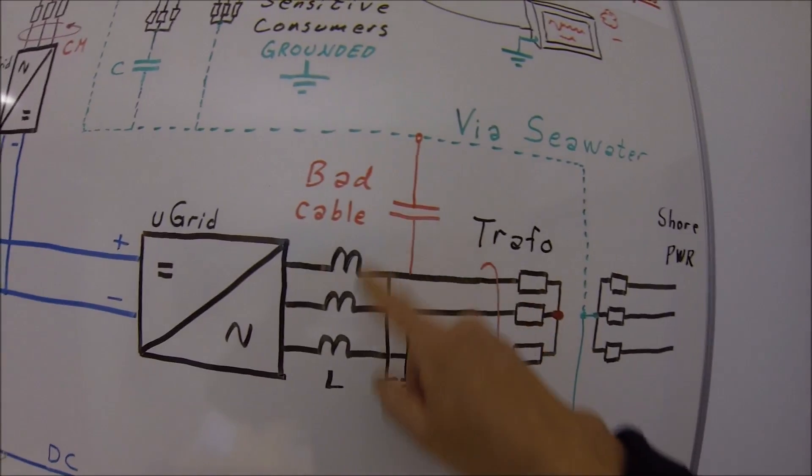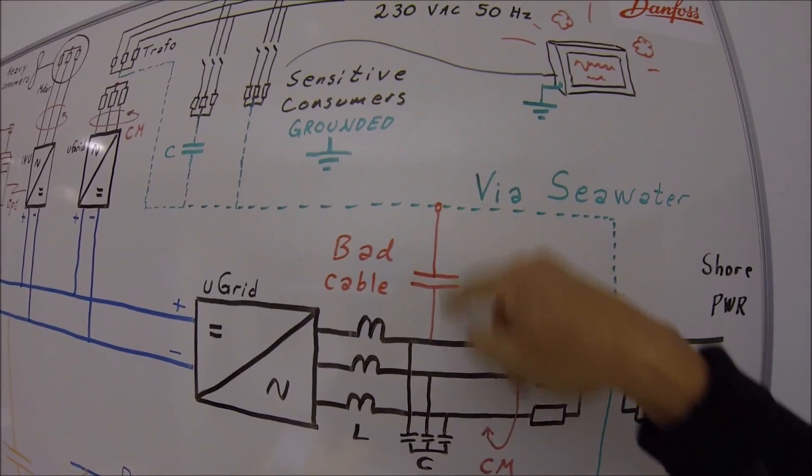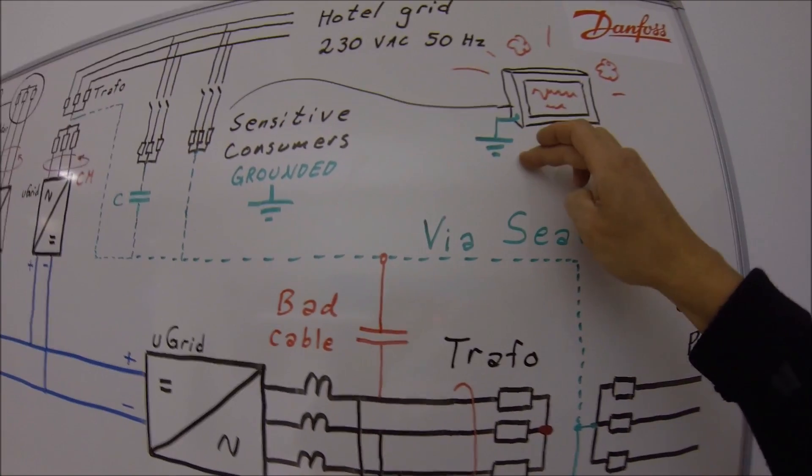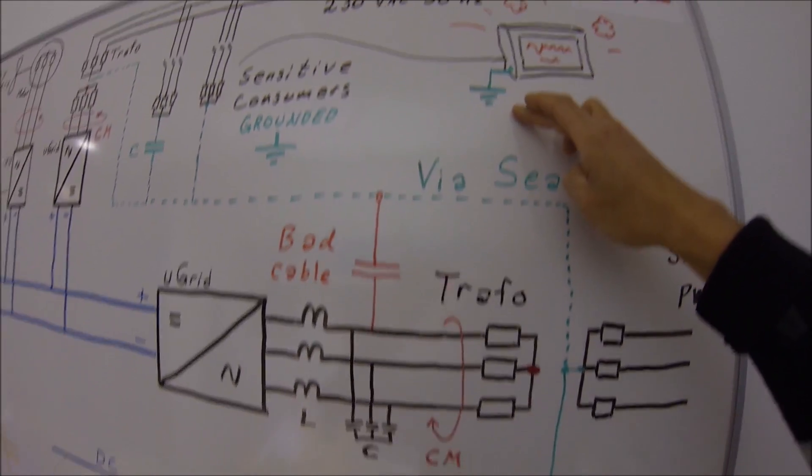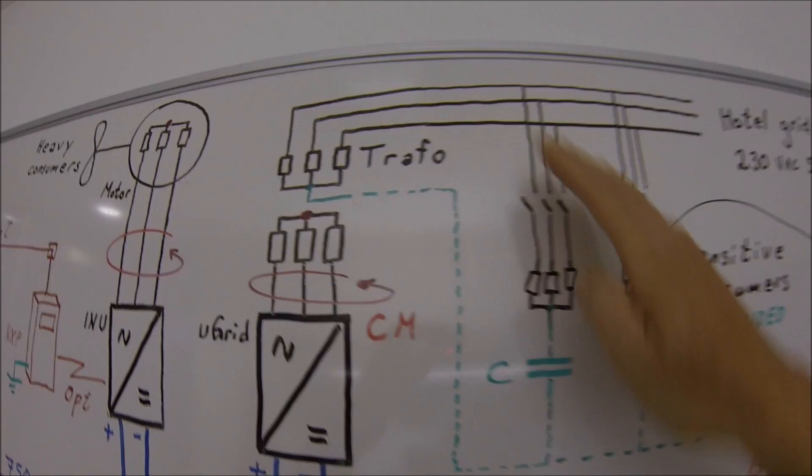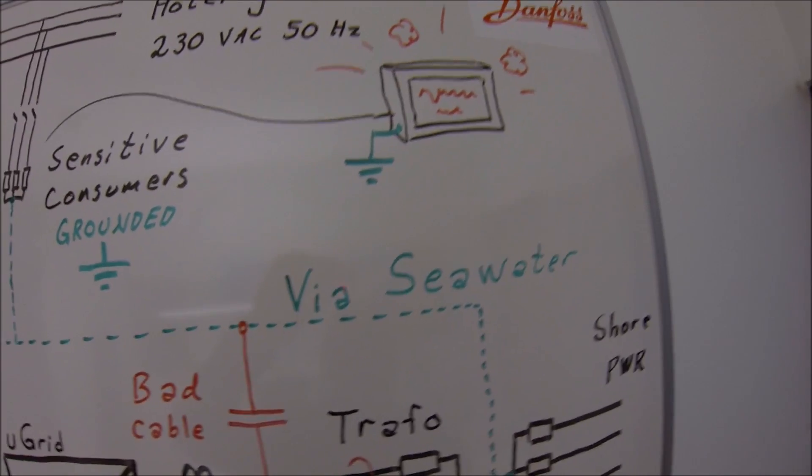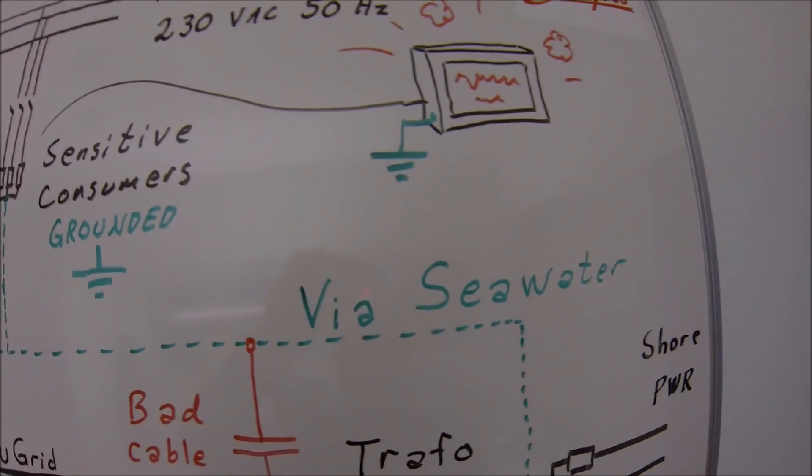You have high stray capacitance between the phases and the protective earth. So you have contaminated your protective earth. Then, even though you got clean power from this side of the transformer, you have the EMC and common mode transferred via the protective earth.